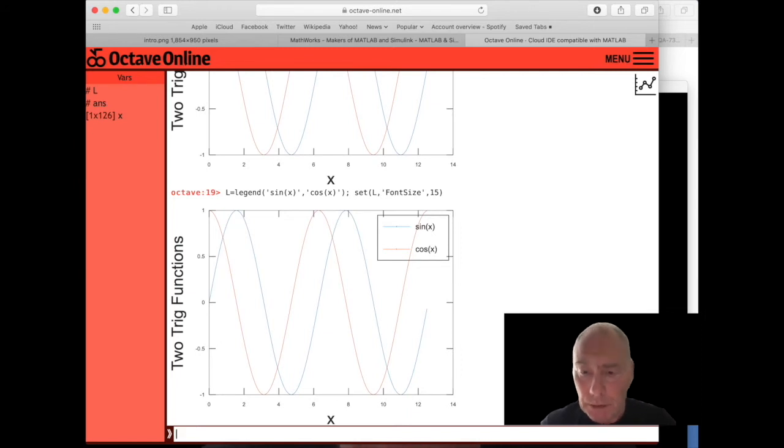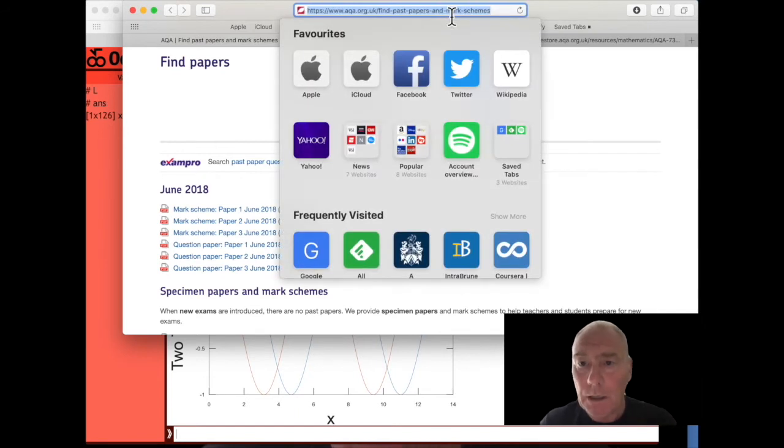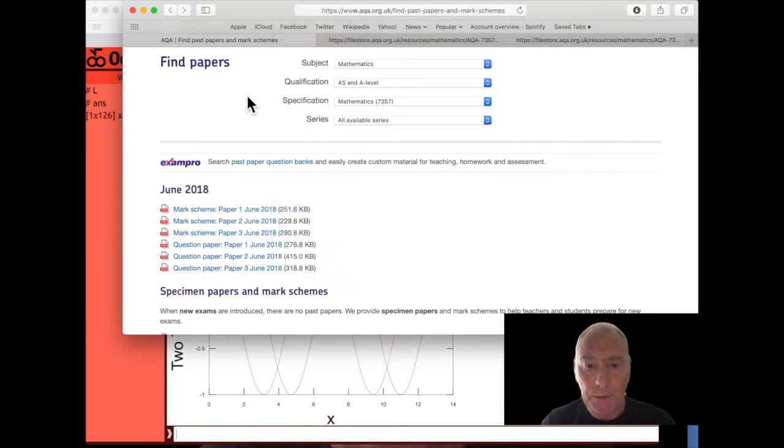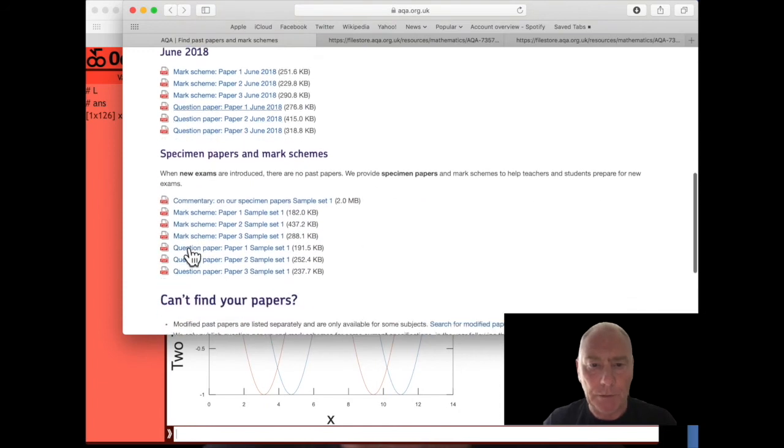So this is called Octave and it's a nice environment for doing mathematics on a computer. And we've shown how to do some familiar things. Let's see now how we can do some more complicated things. For this, I've looked at the AQA website and looked at past papers and mark schemes. In particular, I focused on maths A, AS and A level and the mathematics specification 7357. So for the purpose of this introduction to Octave, I'm going to pick on the specimen papers here. I'm going to pick on question paper 1 and the mark scheme for question paper 1. And I have those opened up in these two tabs.